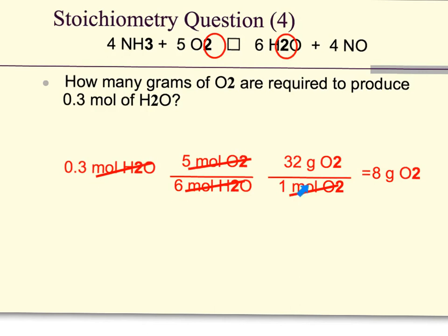Units cancel. Answer, 8 grams. So most of our mole-mass problems are this straightforward. Identify chemical A, identify chemical B, plug your numbers into your equation, solve for it, and it's that simple.